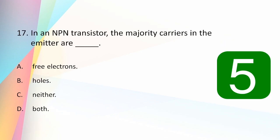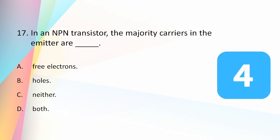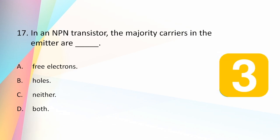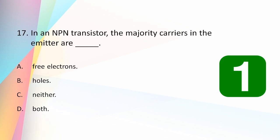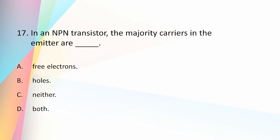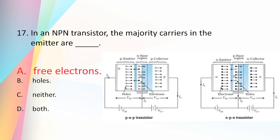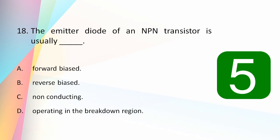In an NPN transistor, the majority carriers in the emitter are: free electrons, holes, neither, or both? The answer is free electrons — in an NPN transistor, the majority current carriers are the free electrons.